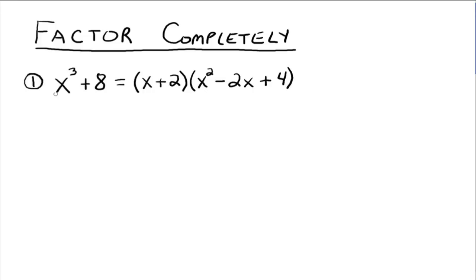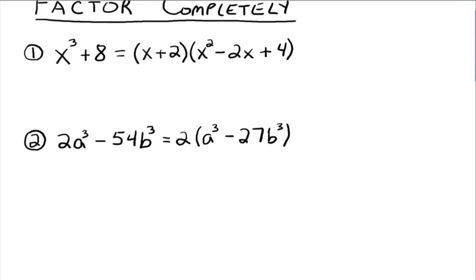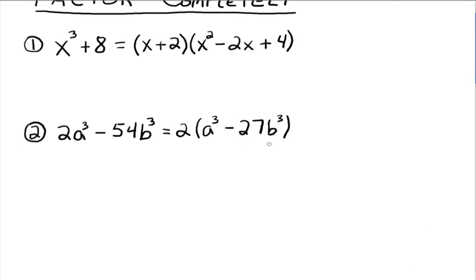That's provided you took out the greatest common factor to begin with. Now let's look at another one: 2a cubed minus 54b cubed. The first thing you look for is the greatest common factor, which in this case is 2. Pull out the 2, leaving behind a cubed minus 27b cubed. Now, a cubed minus 27b cubed is a binomial. If it's going to factor, it's either the difference of two squares, the sum of two cubes, or the difference of two cubes.